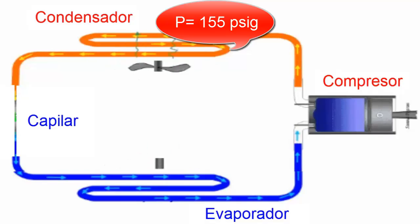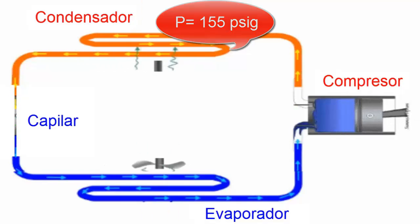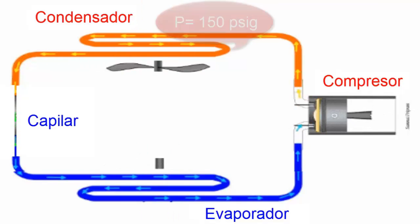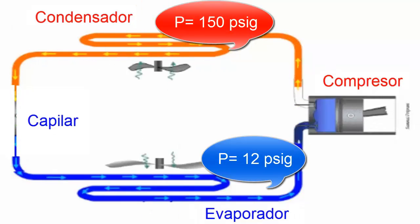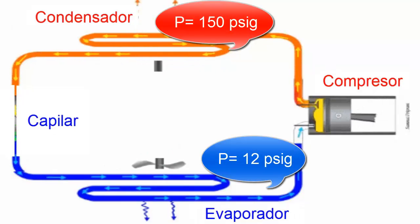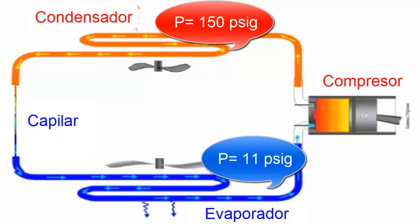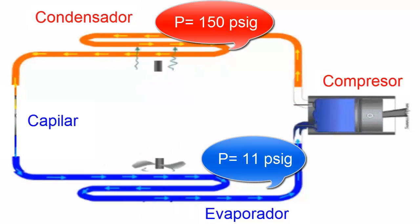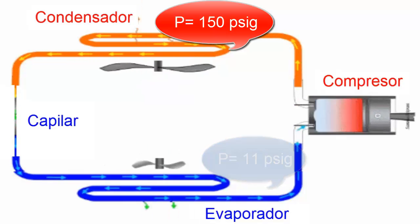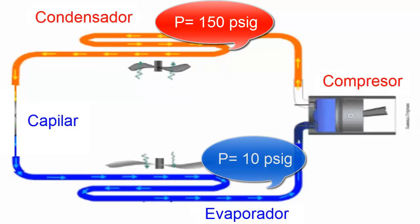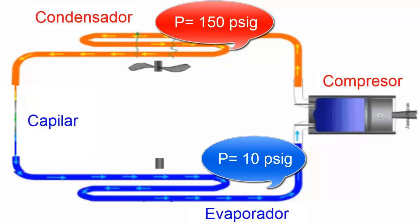5. Over time, the high pressure, which peaked at 160 pounds per square inch, begins to decrease and can return to 150 pounds per square inch because the refrigerant condenses in the condenser, turning into a liquid, thus reducing the high pressure. Meanwhile, the low pressure continues to decrease.